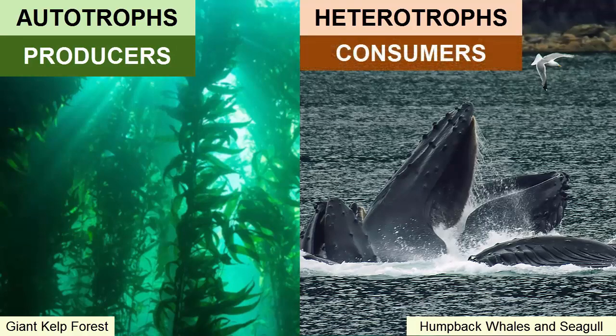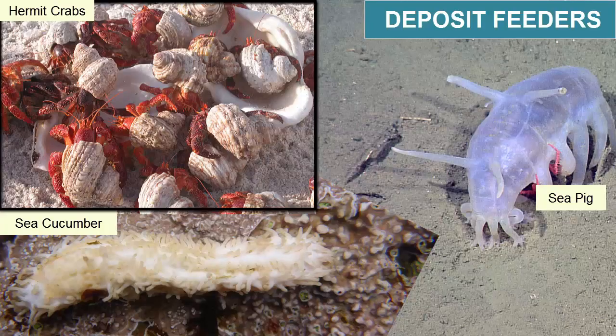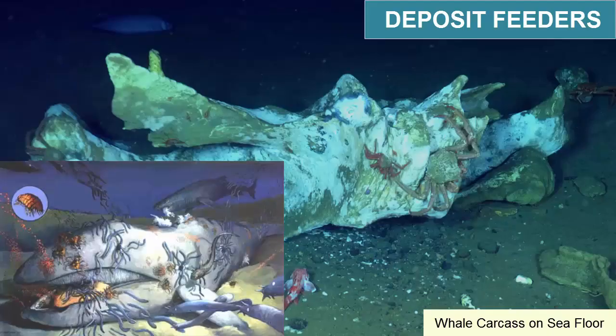There are many ways in which consumers gather their food. Deposit feeders are animals that find their food on the seafloor, either in it or on it. Deposit feeders include scavengers like lamprey and many crabs, shrimp, lobsters, and other organisms that eat detritus that sits on the bottom of the seafloor.